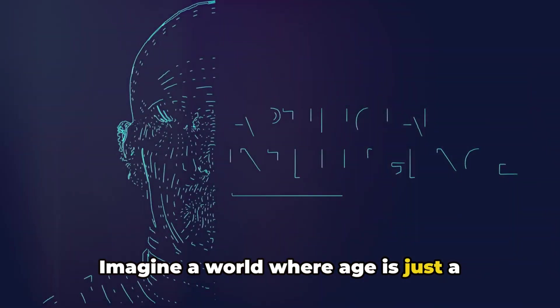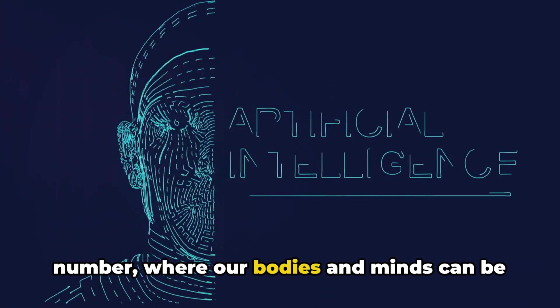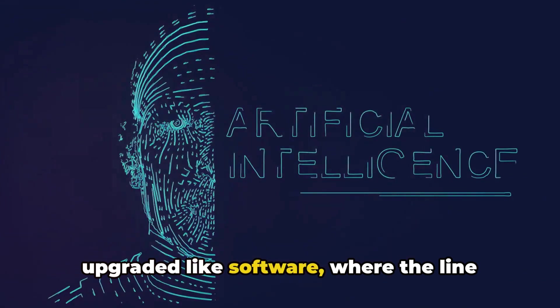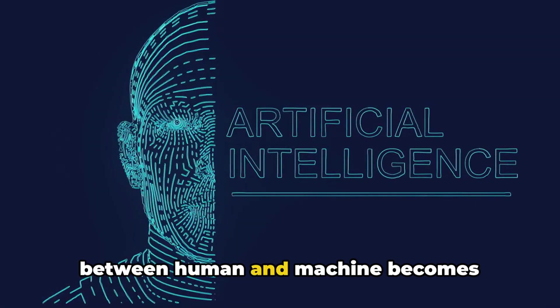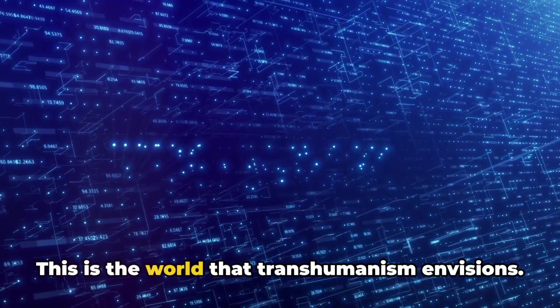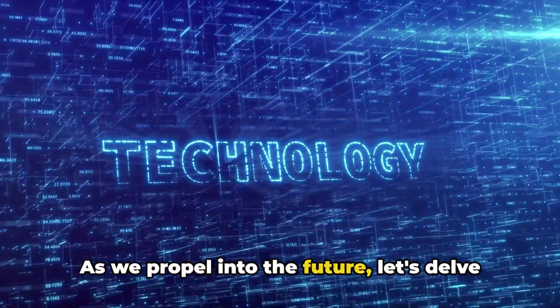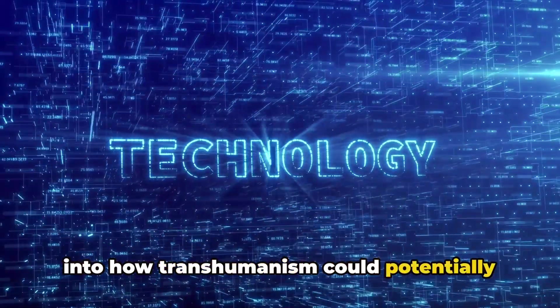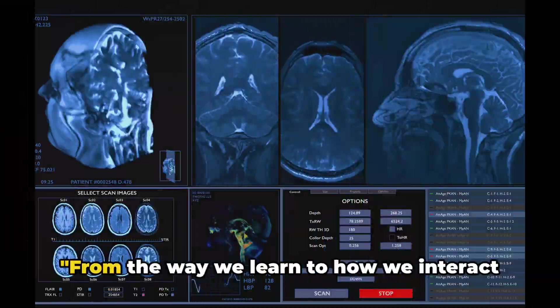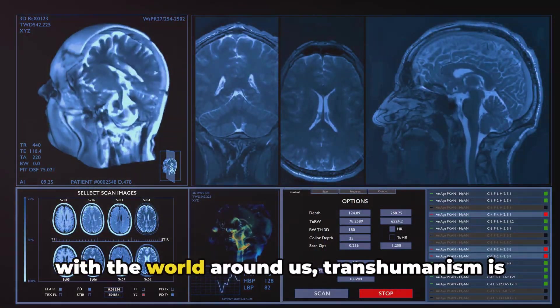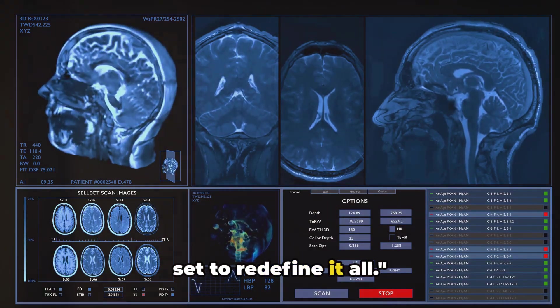Imagine a world where age is just a number, where our bodies and minds can be upgraded like software, where the line between human and machine becomes increasingly blurred. This is the world that transhumanism envisions. As we propel into the future, let's delve into how transhumanism could potentially reshape our world. From the way we learn to how we interact with the world around us, transhumanism is set to redefine it all.